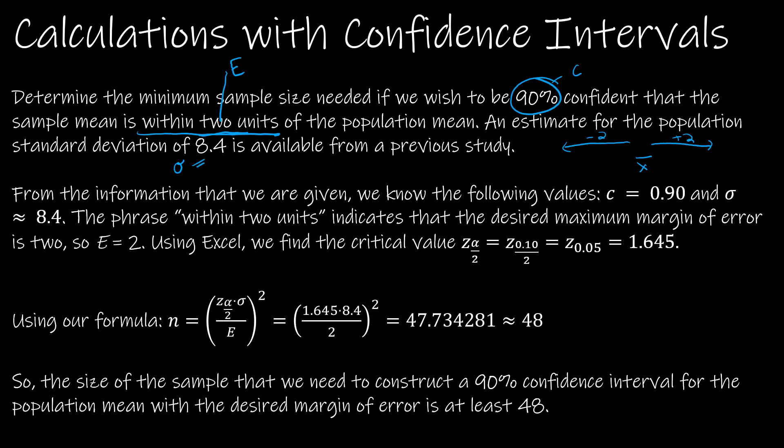So the only thing that is not given to us that we have to do a little bit of work for is what is the critical value, which is using the 90%. So again, we talked about how to find this and we talked about how to do it using Excel as well. If I have 90% in the center, then that means 10% is in the tail. So this tail has 5% and this tail has 5% because it has to add up to 1.